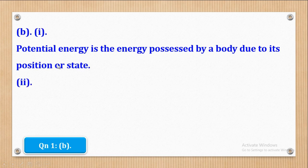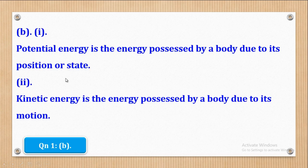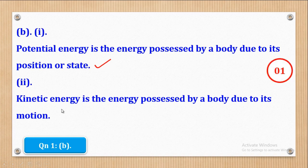For Roman 2, kinetic energy is the energy possessed by a body due to its motion. The key difference is that potential energy depends on position or state, while kinetic energy depends on motion. Each correct definition earns one mark.